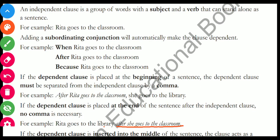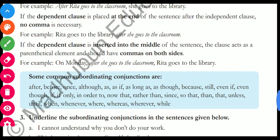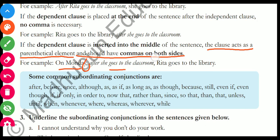'Rita goes to the library after she goes to the classroom.' When the dependent clause is at the end, no comma is needed. If the dependent clause is inserted into the middle of the sentence, it acts as a parenthetical element and should have commas on both sides. For example, 'On Monday, after she goes to the classroom, Rita goes to the library.'